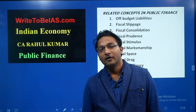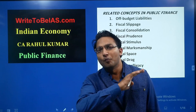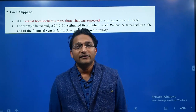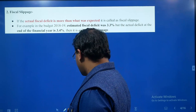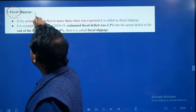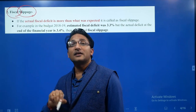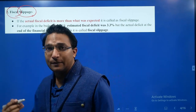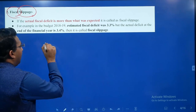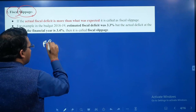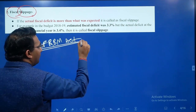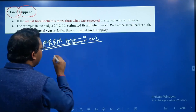Welcome. In this session I will discuss many important concepts. The next term is fiscal slippage. Fiscal relates to the government treasury, and slippage means there is some lag. As per the FRBM Act of 2003, there are some upper limits.